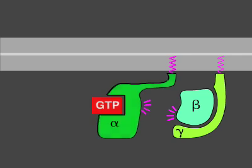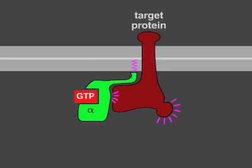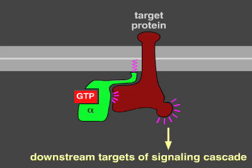In some cases, as shown here, the activated alpha subunit dissociates from the activated beta-gamma complex, whereas in other cases the two activated components stay together. In either case, both of the activated components can now regulate the activity of target proteins in the plasma membrane, as shown here for a GTP-bound alpha subunit.